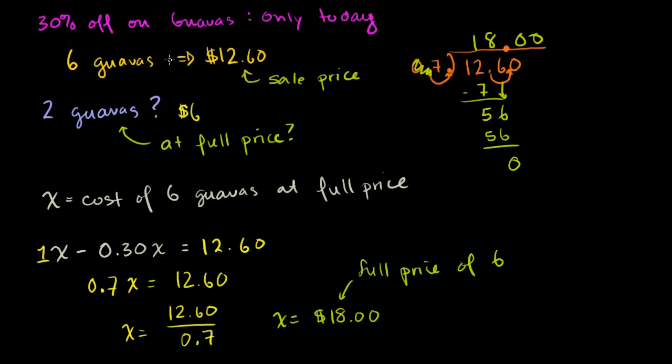So just to give a quick review of what we did, we said the sale price on six guavas, $12.60. That's 30% off the full price. Or you could say this is 70% of the full price. So if you say X is the full price of six guavas, you could say the full price of six guavas minus 30% of the full price of six guavas is equal to $12.60. And that's equivalent to saying 70% of the full price is $12.60. Then we just solved this algebraically. Divide both sides by 0.7. And then we got X, the full price of six guavas, is $18. Or that's $3 per guava. Or $6 for two.